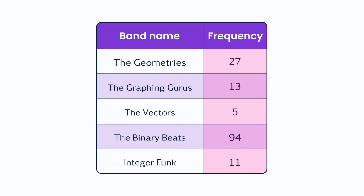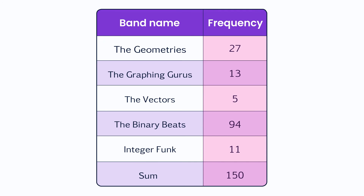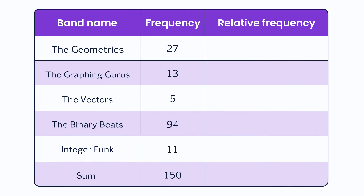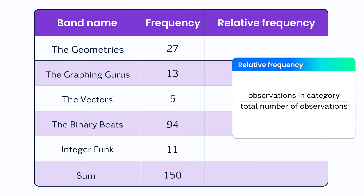So, add a row to your frequency table for the sum of the frequencies. There were a total of 150 votes, as expected. Next, you add a column for your relative frequencies. You find the relative frequency for each category by dividing the observations within that category by the sum of the observations.